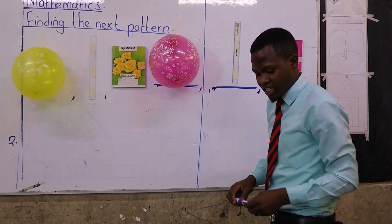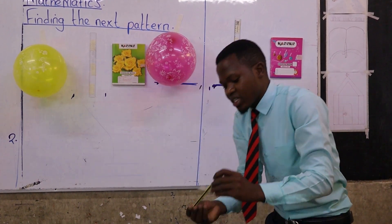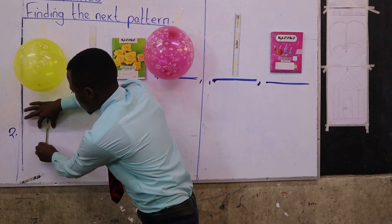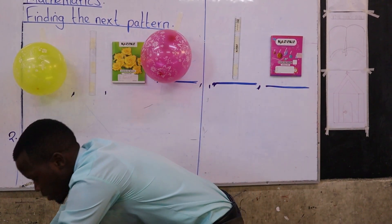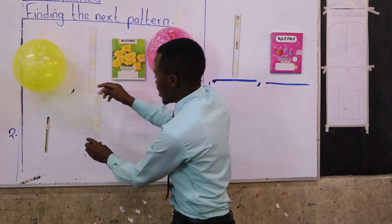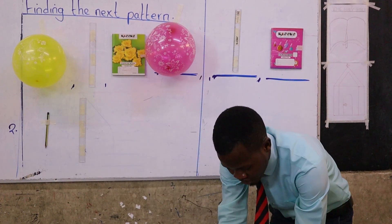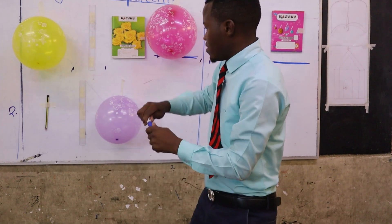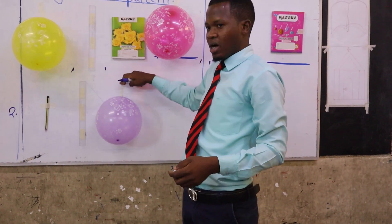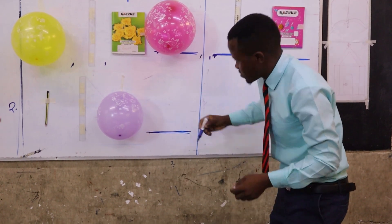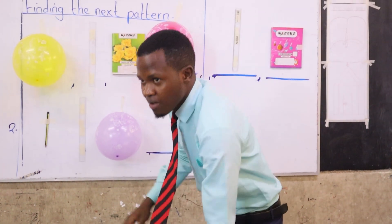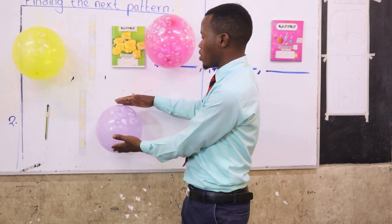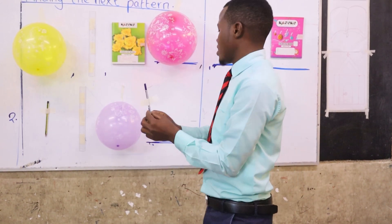Now for the second example, I'm going to use different items — something we use in class. What is this? A pencil! So this pencil is my first item, followed by a ruler, and then a balloon. So the pattern is: pencil, ruler, balloon. Who will tell us the next item? Pencil! Can you clap for her? One, two, three!